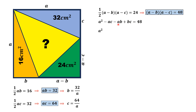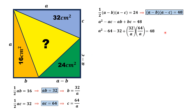Substituting aB = 32, B = 32/a, and C = 64/a, and simplifying, we get a² minus 64 minus 32 plus BC = 48. Taking the constant terms to the right-hand side and simplifying the product, we get a² plus 2048 over a² = 144.